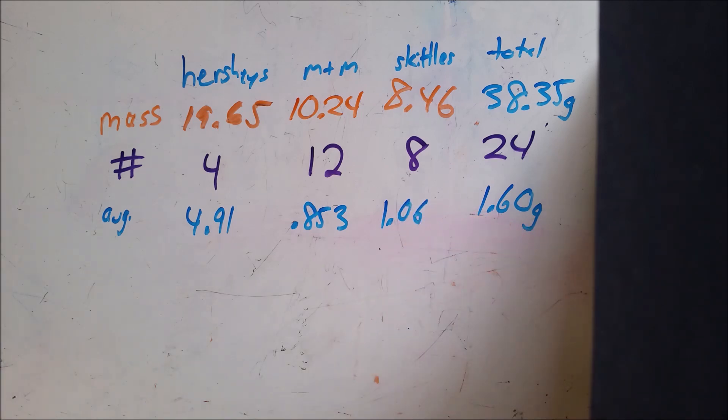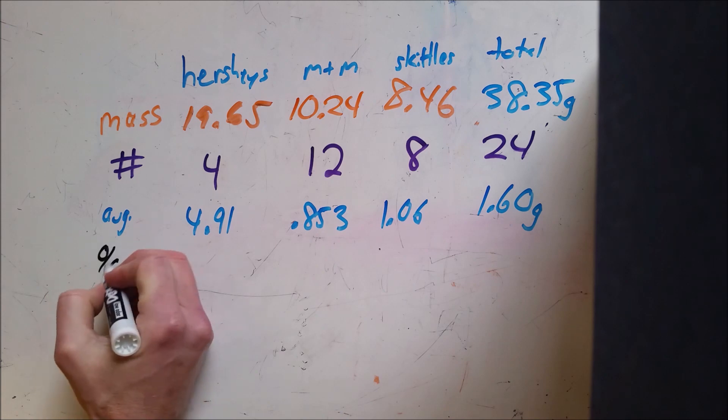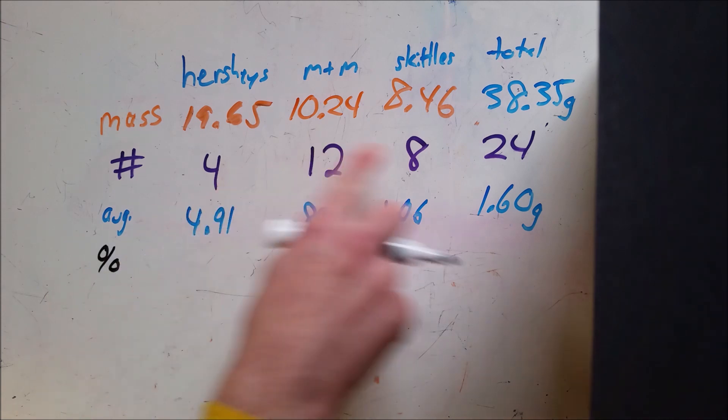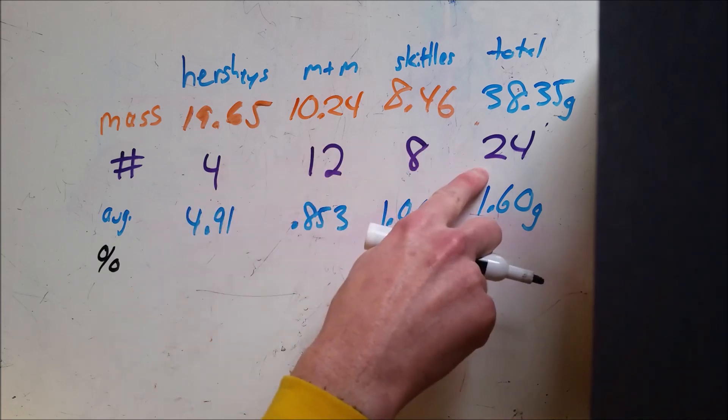So another way that I can do this average is instead of dividing by the total number, I can do percentages. So I'm going to write out what percent of my candy pieces by number were each of these kinds. So 4 out of 24 is 1 out of 6.